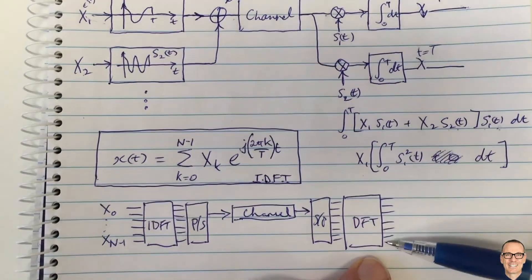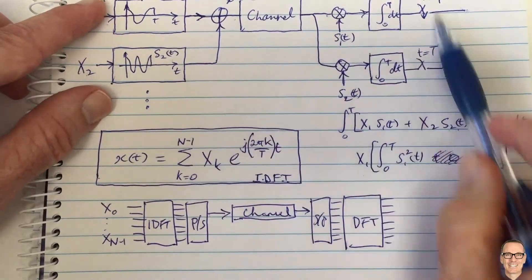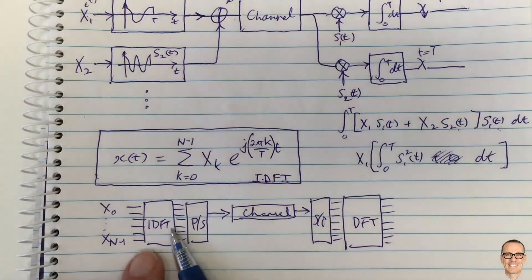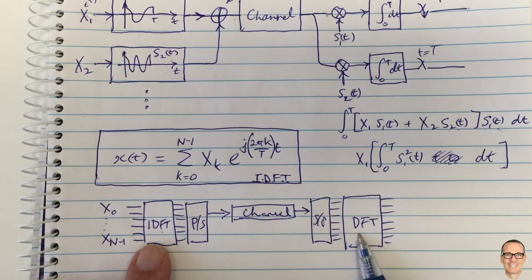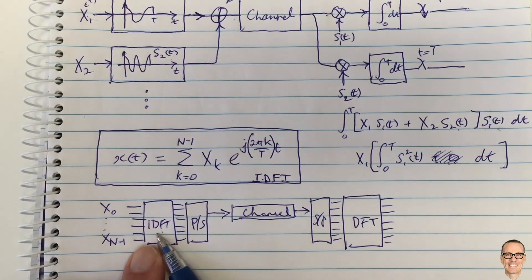So all of the analog electronics here can be replaced by digital computations of inverse discrete Fourier transforms and discrete Fourier transforms.